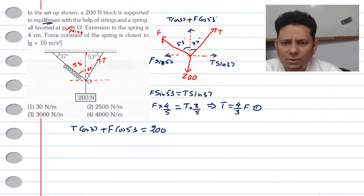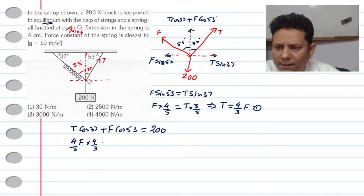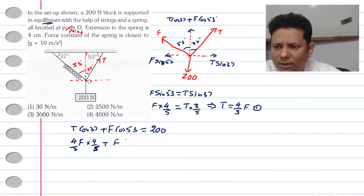If we replace T with (4/3)F, this becomes (4/3)F cos 37°. The value of cos 37° is 4/5, so we get (4/3)(4/5)F = 16/15 F. And cos 53° = 3/5. So the equation becomes F·(16/15) + F·(3/5) = 200.